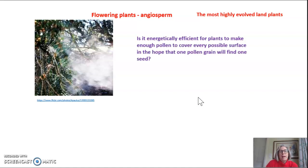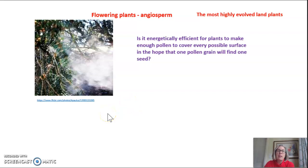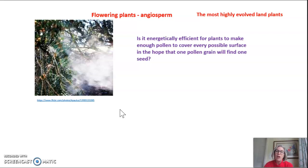Going back to our gymnosperms, which were the first plants to evolve pollen that could be moved from the male gamete and find the female gamete by blowing in the wind — unfortunately wind isn't specific. So in order to produce enough pollen to ensure that at least one grain lands on a female gamete, gymnosperms have to produce a tremendous amount of pollen, which not only wastes energy for the trees but causes a lot of allergy problems for us.